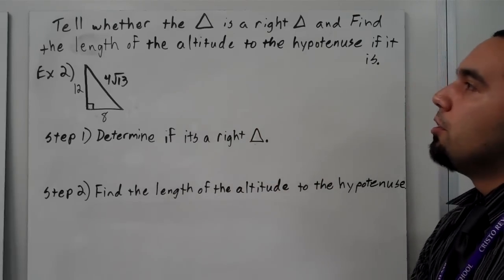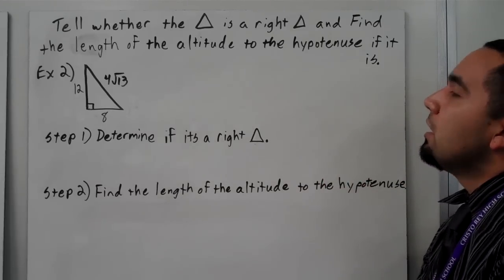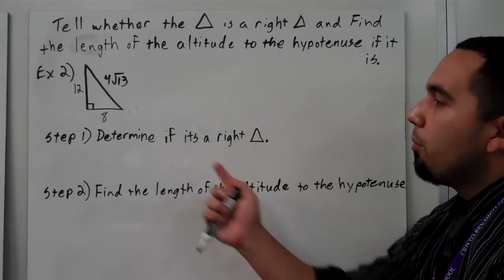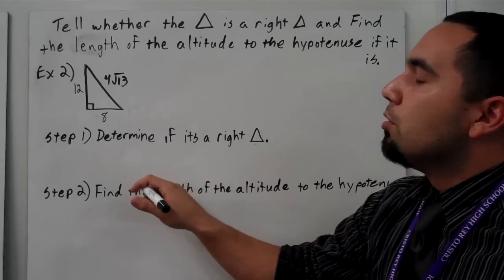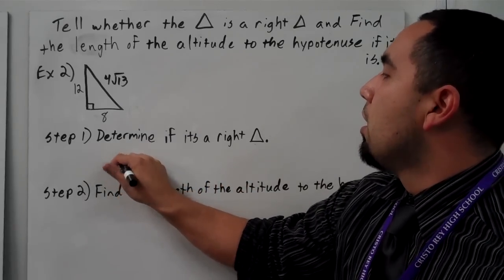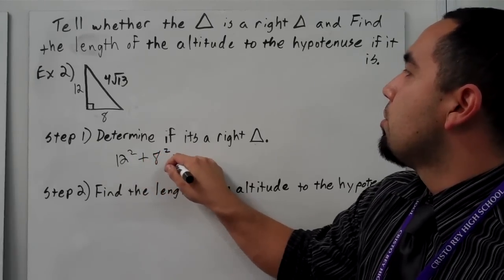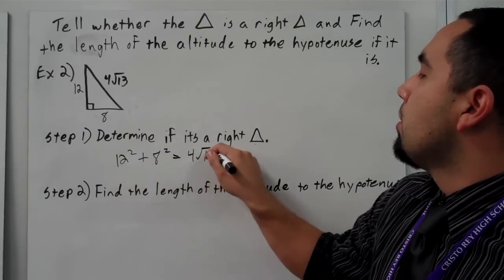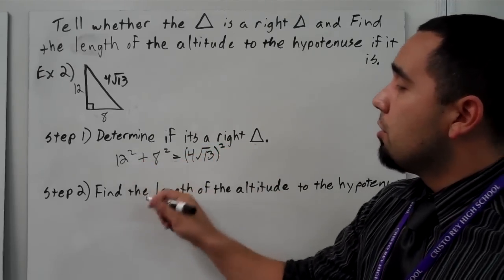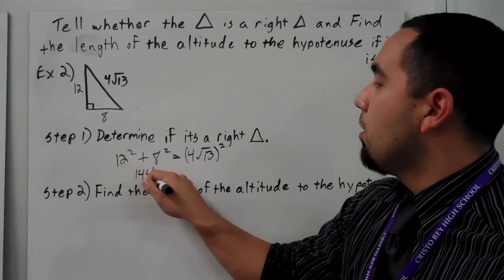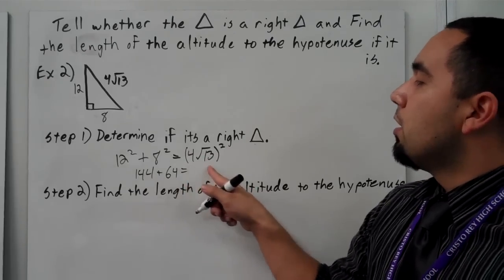I'm only going to do two examples today. This problem says: tell whether the triangle is a right triangle and find the length of the altitude to the hypotenuse, if it is. So basically we have a two-step problem. Step one is we're going to determine if it's a right triangle using the Pythagorean theorem. I'm going to say 12 squared plus 8 squared should equal 4 root 13, all of that squared.